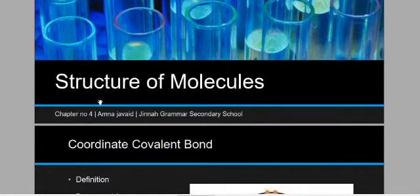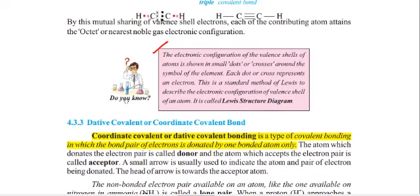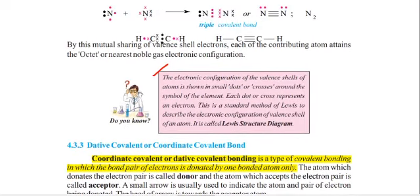Today, we have a main topic called Coordinate Covalent Bond and Dative Covalent Bond. Before the Covalent Bond and Dative Covalent Bond, we can see a box-side Lewis Structure Diagram. The electronic configuration of valence shell of atoms is shown in small dots or cross around the symbol of element.